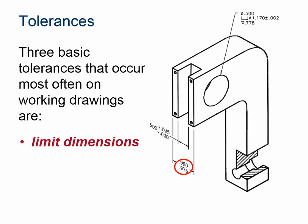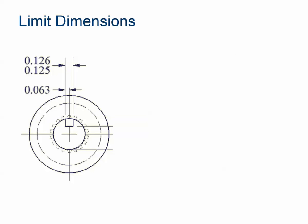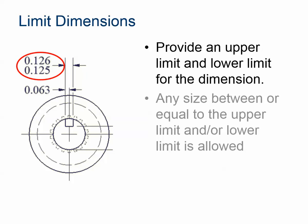The first is called a limit dimension. We'll talk about the specific thing circled on the slide. We also have something called a bilateral tolerance and a unilateral tolerance — those three are circled on this drawing. When you go to the activity, the first objective is going to ask you to go through these particular drawings and specify where the tolerances are and what kind of tolerances they are. A limit dimension is simply telling you that there is an upper and a lower limit to the size of a dimension. So here 0.125 is the lower limit and 0.126 is the upper limit, and any dimension between those two numbers is acceptable.